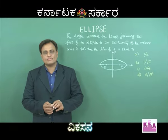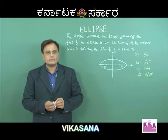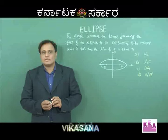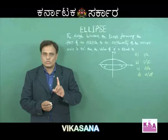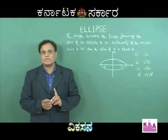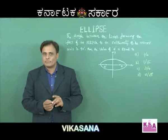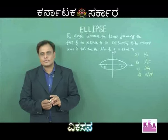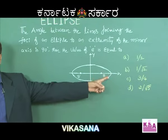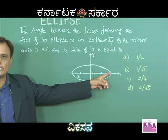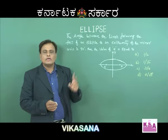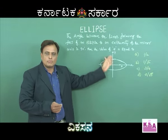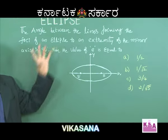Now we will discuss problems based on the topic ellipse. Let us review some fundamental concepts of ellipse before starting. The standard equation of ellipse is x²/a² + y²/b² = 1. Now b² = a²(1 - e²), which will be helpful to find the exact value of eccentricity e. The standard ellipse has two axes: the major axis and the minor axis, with two foci and two directrices. It is symmetrical about both axes.